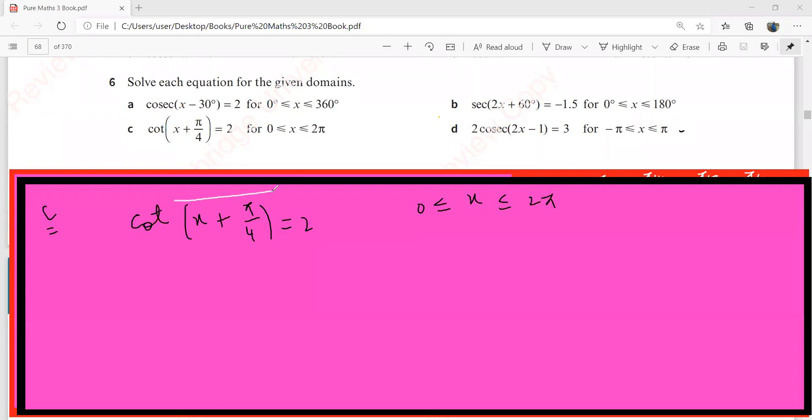Part c has x between 0 and 2π. We need to tackle this composite angle. We don't like it, so let x plus π by 4 equal alpha. The equation becomes cotangent alpha equals 2. Put the lower limit, which is zero, so the lower limit for alpha is π by 4. Put the upper limit, 2π, so this becomes 2π plus π by 4, which is 9π by 4.